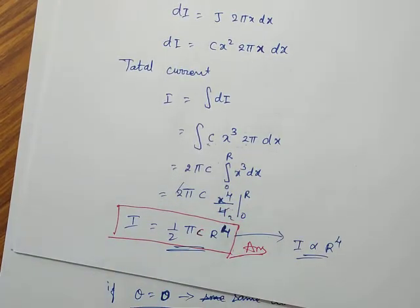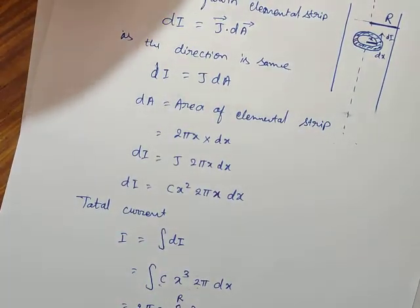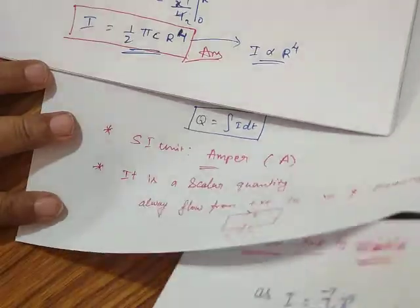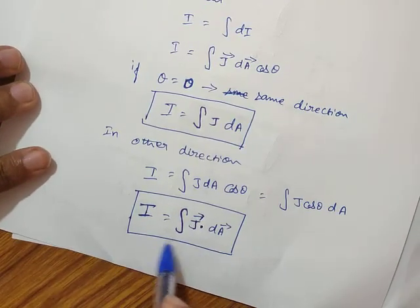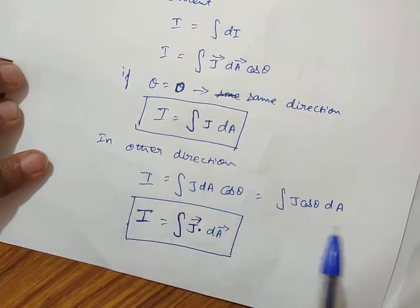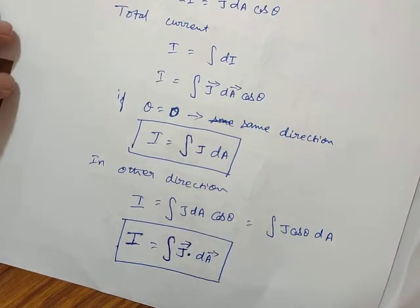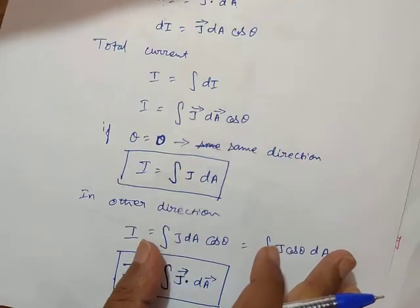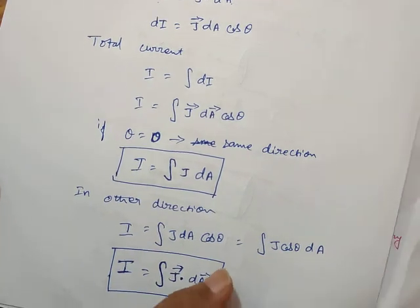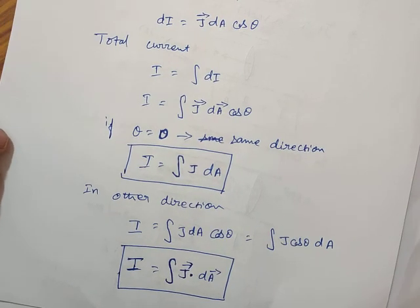This is the way we can use the current density concept in different situations — not only for variable cross-section problems, but also for dot product, angle, area, and current-related objective questions. For today, practice what electric current is, what current density is, and the related formulas. In the next class, I will discuss drift velocity and other related topics. Thank you all.